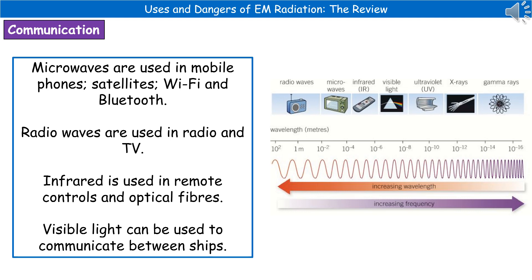The first one we're going to consider are microwaves, which you can see second in from the left on the diagram. We use microwaves in mobile phones, satellite communication, Wi-Fi, and Bluetooth. All of those rely on microwaves being transmitted from the source to something that's going to receive them.